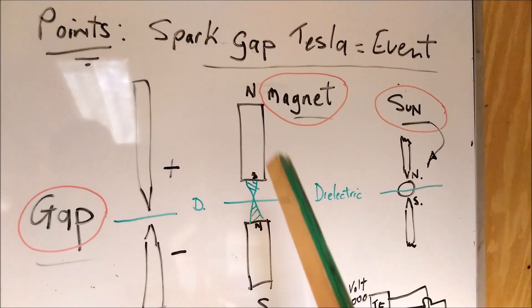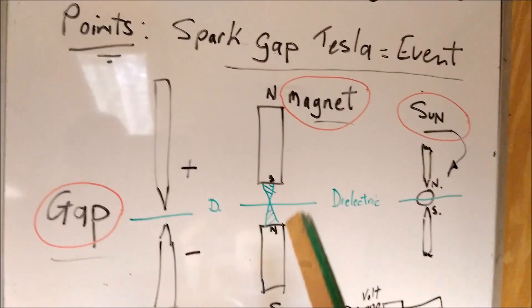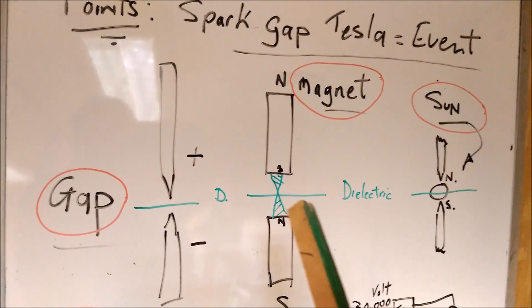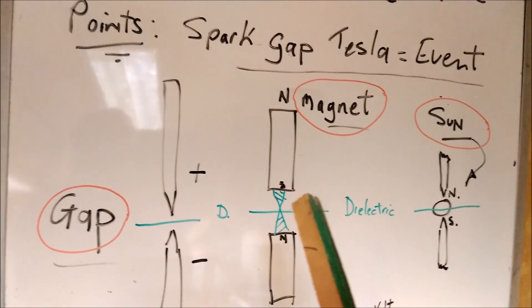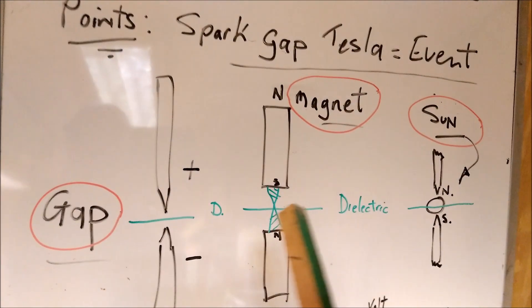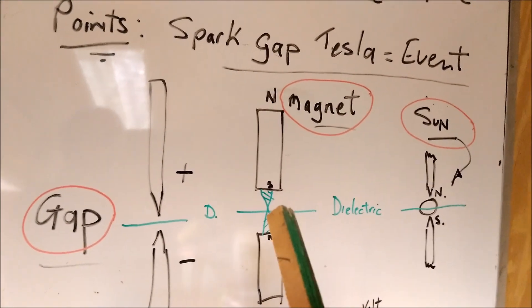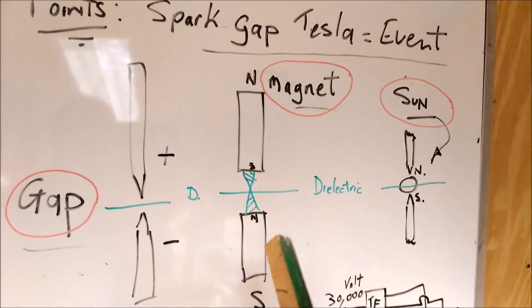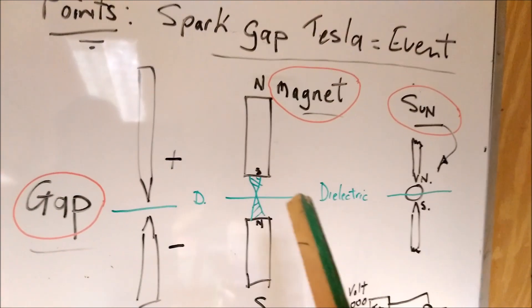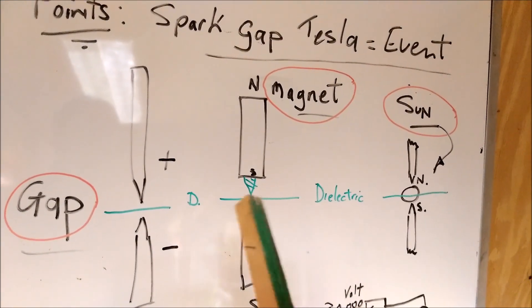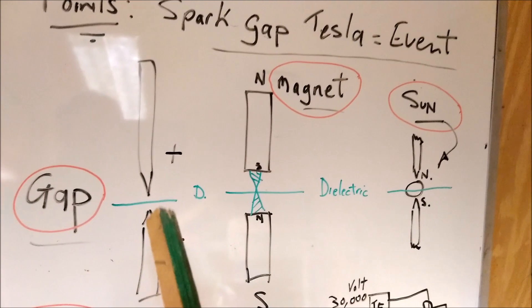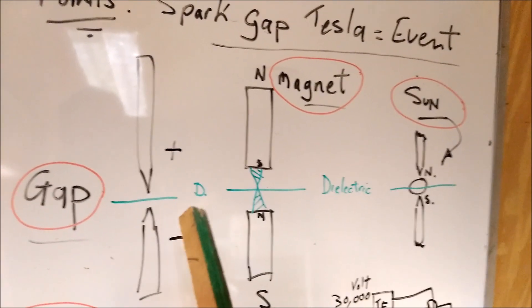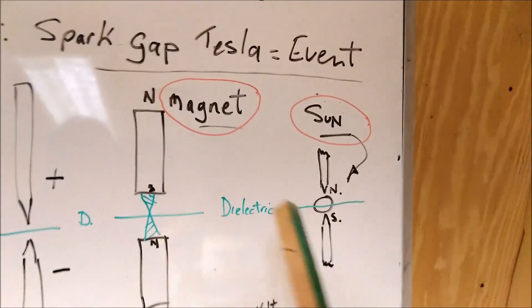And when you break the magnet, there's a dielectric wave as it goes. It can either go up or down depending. And so I'm looking at how the dielectric works in the magnetic field as well as the magnetic field of the spark gap, but also in relation to our sun.